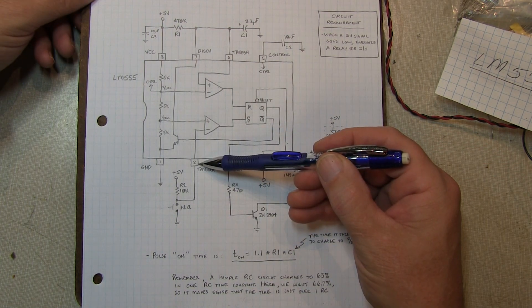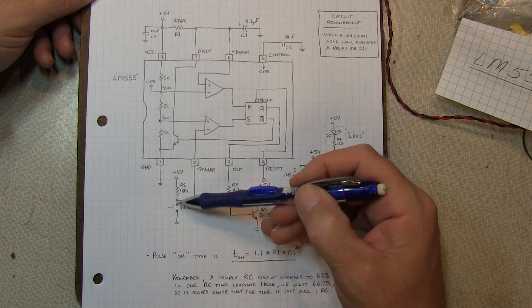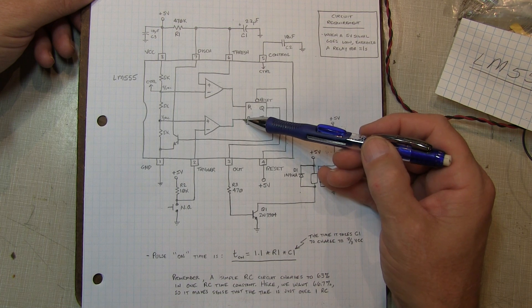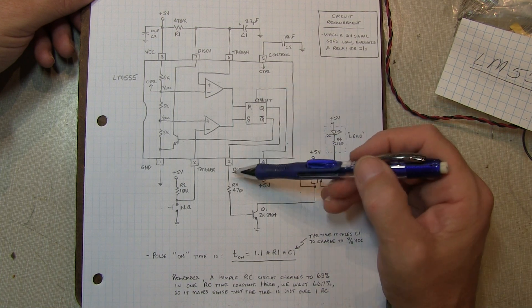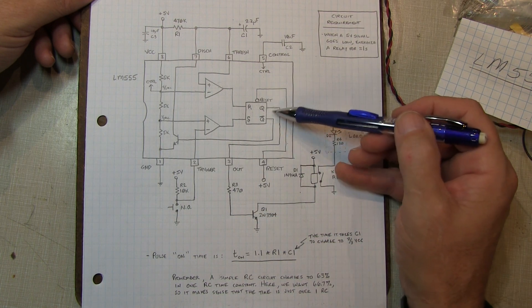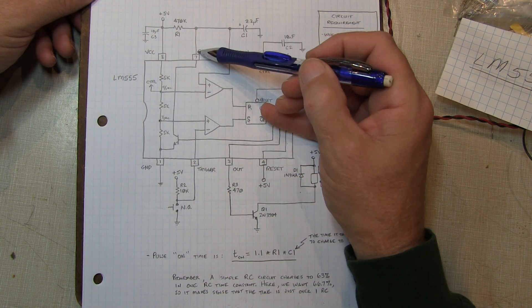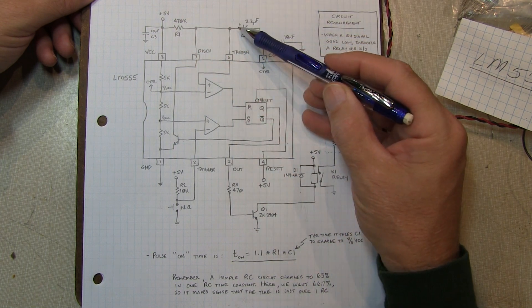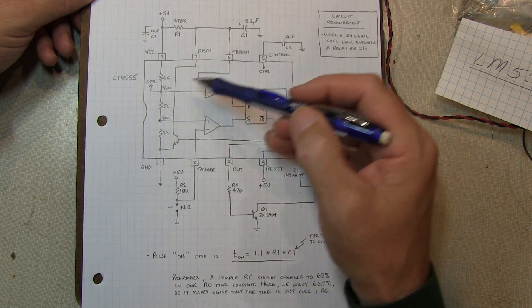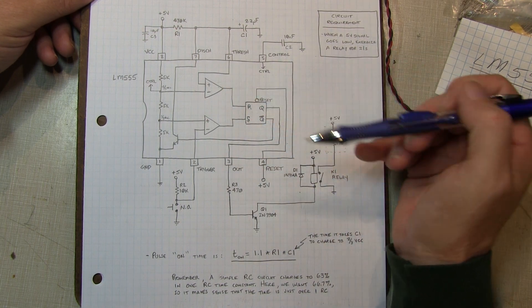Now, if the trigger input is brought down below one-third VCC, the output of this comparator will go high. We're going to do that on the circuit by simply yanking that down to ground. Once that happens, we hit the set on the flip-flop. The Q output then goes high, thereby turning on our transistor and turning on our relay. At the same time, we're also turning off the discharge transistor. So essentially, this goes open circuit. Now the capacitor is allowed to charge up through this resistor, and it's going to charge up exponentially. And it's going to keep doing that until the voltage on the capacitor reaches two-thirds VCC.